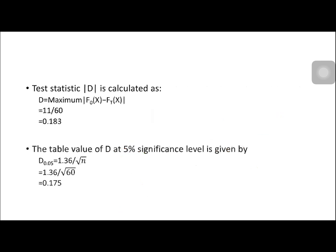Test statistic D is calculated as the maximum absolute value of the difference between the observed and the theoretical distribution. We have 11 over 60, and that is equal to 0.183. For the tabular value of D, at 5% level of significance, that is given by 1.36 divided by the square root of N. We have 1.36 divided by the square root of 60, which gives us 0.175. This is our tabular value. This is our computed value.